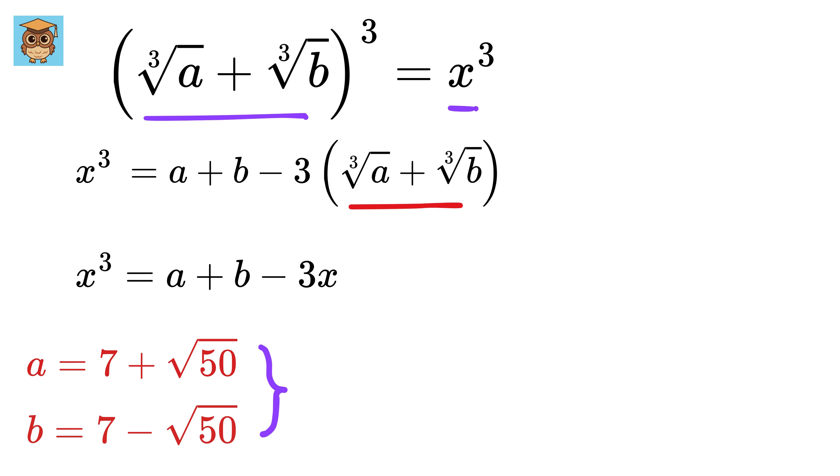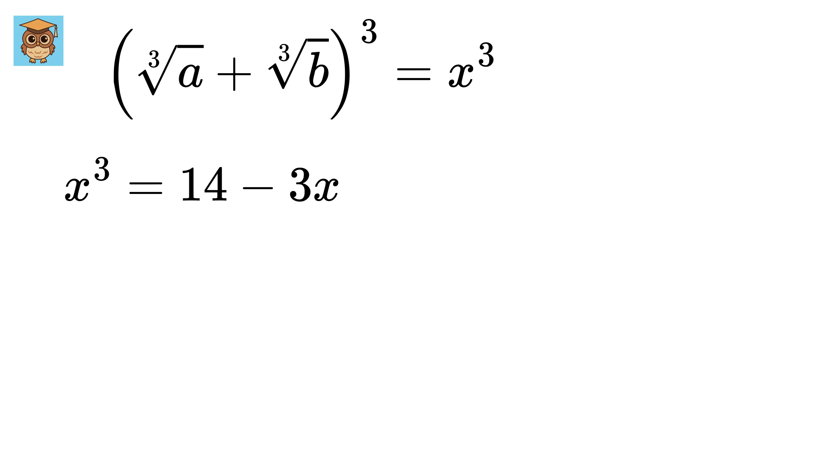Now A and B are conjugates of each other, and therefore their sum will be 7 plus root 50 plus 7 minus root 50. This will be cancelled, and we are left with 14. Thus we have this cubic equation, and now we just have to solve for this, and we are done.